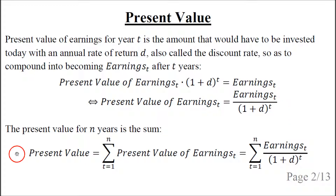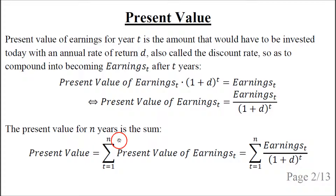The present value for n years is the sum of the present value of the individual years. And we could have the number of years n go to infinity.